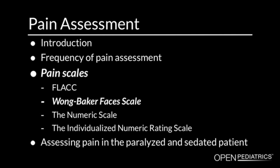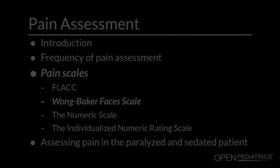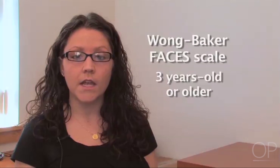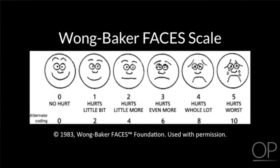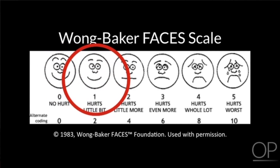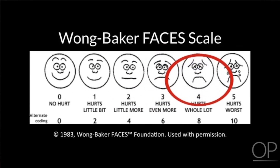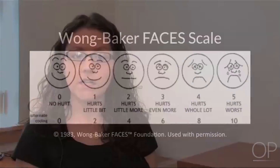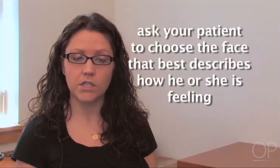The Wong-Baker Faces Scale is recommended for a patient who is three years and older. In this scale, the result is determined by the patient. Explain to the patient that each face is for a person who feels happy because he has no pain, or sad because he has some or a lot of pain. Phase zero is very happy because he does not hurt at all. Phase one hurts just a little. Phase two hurts a little bit more. Phase three hurts even more. Phase four hurts a whole lot. Phase five hurts as much as you can imagine, although you don't have to be crying to feel this bad. Ask your patient to choose the face that best describes how he or she is feeling.